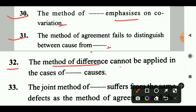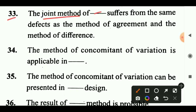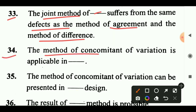Question 32: The method of difference cannot be applied in the case of dash causes. Answer: Permanent causes. Question 33: The joint method of dash suffers from the same defects as the method of agreement and the method of difference. Answer: Agreement and difference. Question 34: The method of concomitant variation is applicable in dash. Answer: Intermixture of effects. Question 35: The method of concomitant variation can be presented in dash design. Answer: Graphic design.